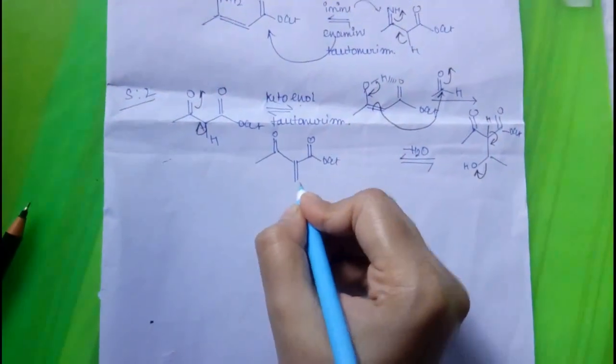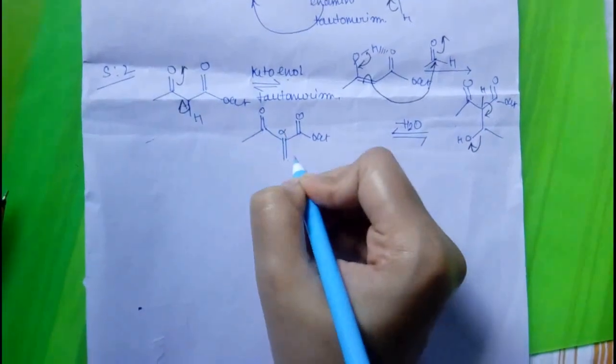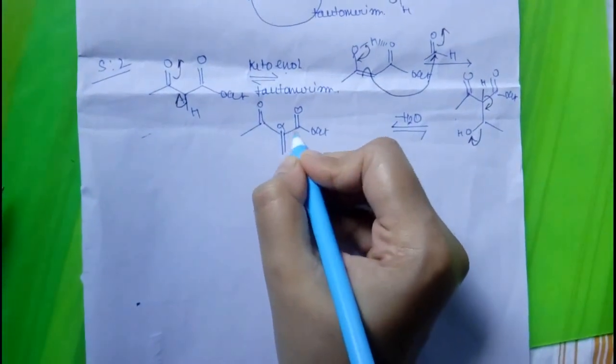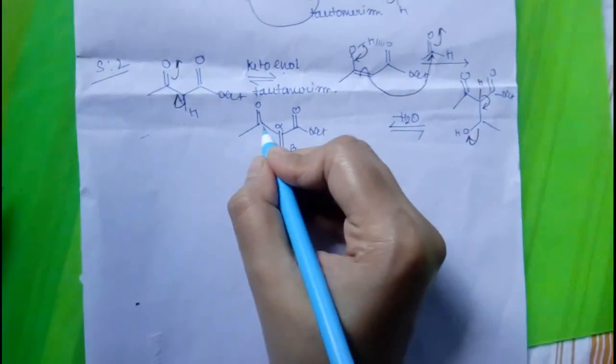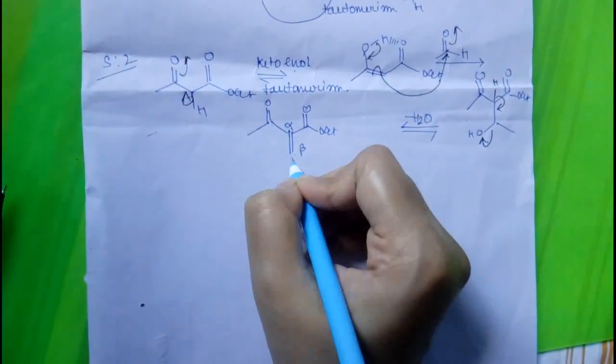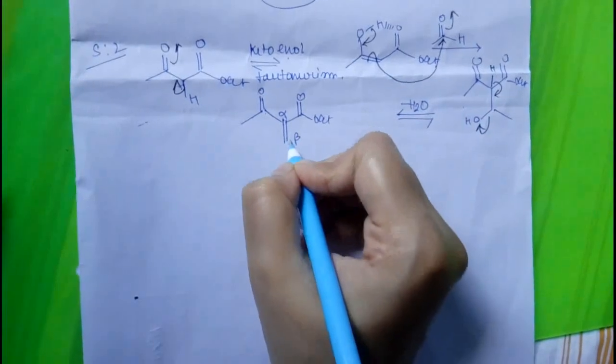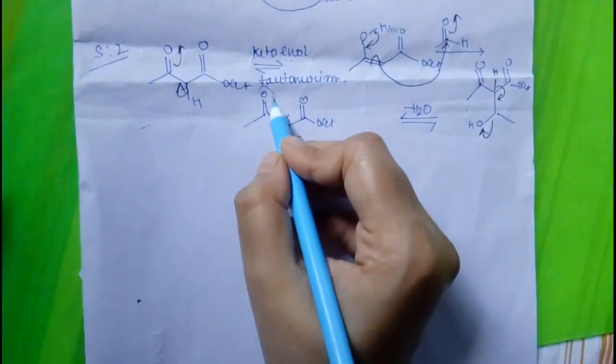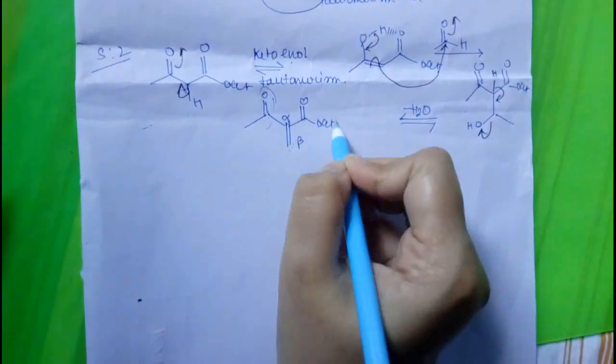This compound is called alpha-beta. This position is alpha with respect to this ester group or this carbonyl group. And this is unsaturated double bond. So, it will be called alpha-beta unsaturated ketone or alpha-beta unsaturated ester.